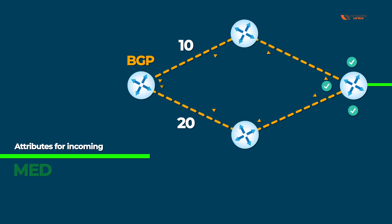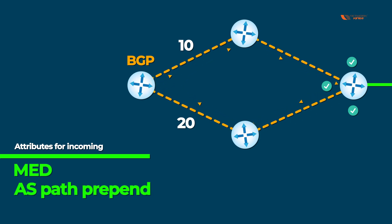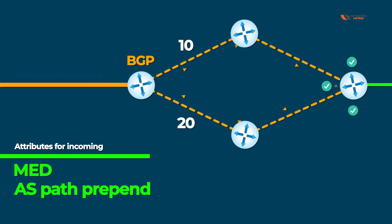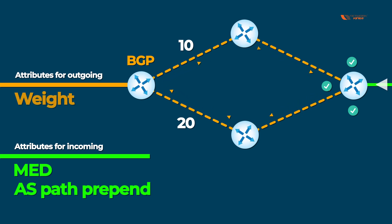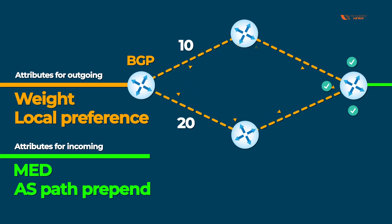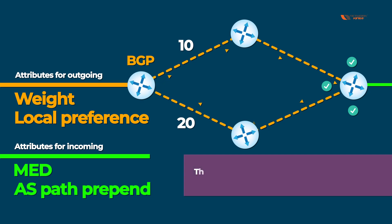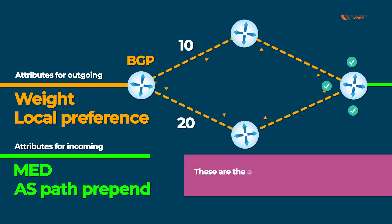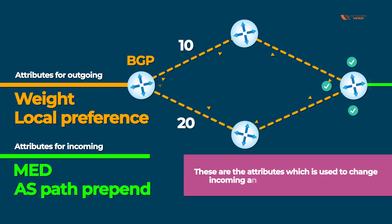The attributes used for incoming traffic in BGP are MED and AS path prepend. For outgoing traffic there are multiple ways, like weight and local preference. These are the attributes you use to change your incoming and outgoing traffic behavior.